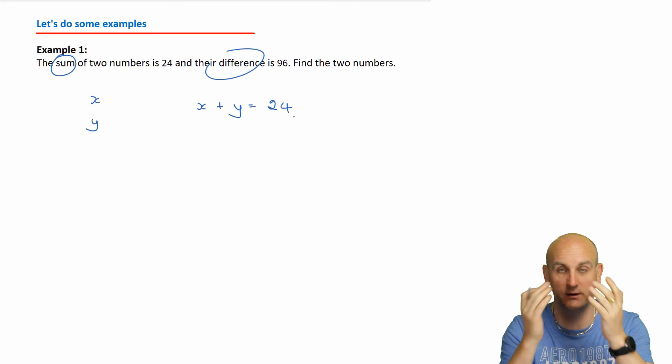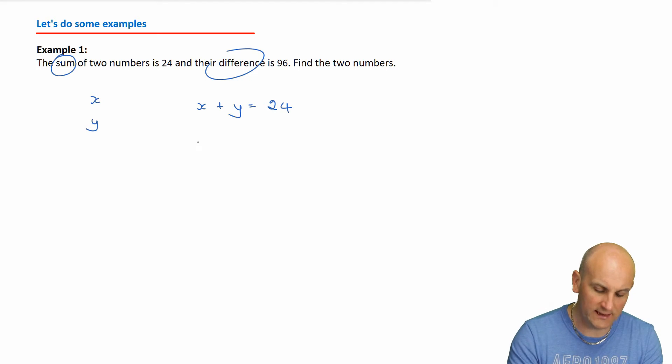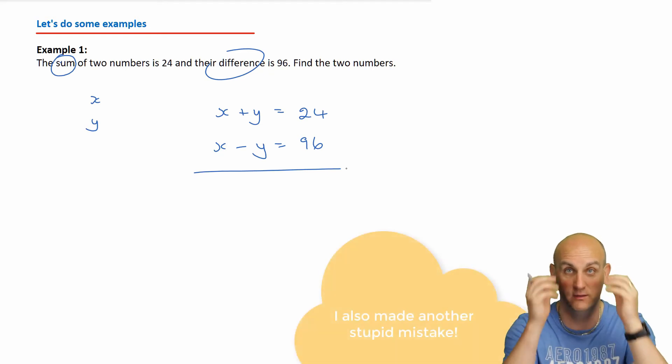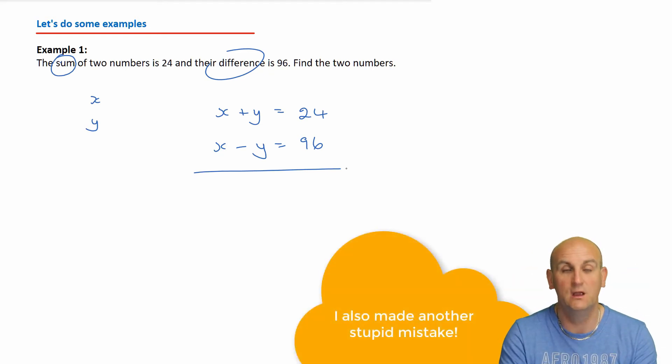And it says their difference is 96. So now my brain's going, well what do I do? Which is bigger? Is x bigger or y bigger? It doesn't actually matter. So what I'm going to say now is that x minus y must equal 96. Now we could sit here and go, that doesn't seem to work. How on earth? But one of those I think is going to be a negative number. A while ago I did this question and looked at it for a while and went, this can't be right. But one of those numbers has to be negative.